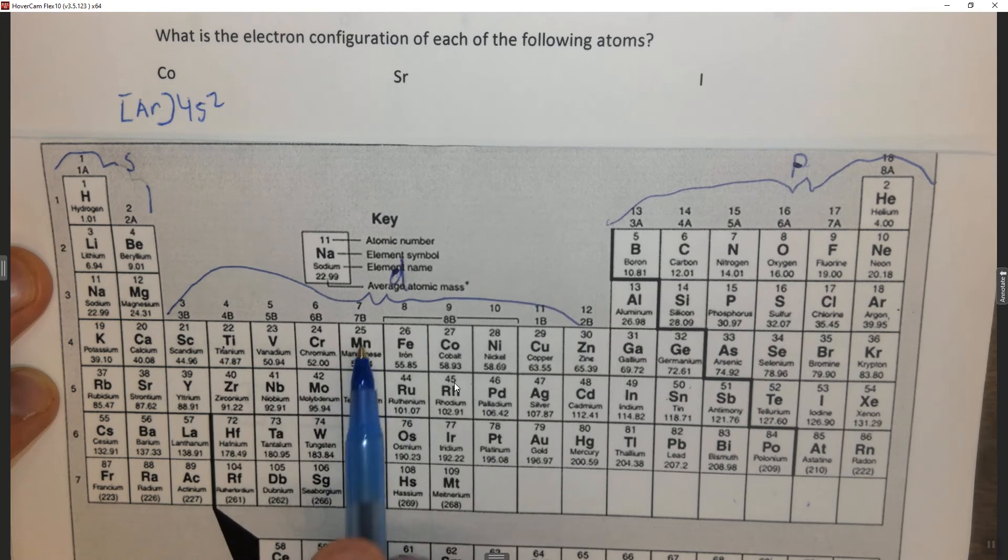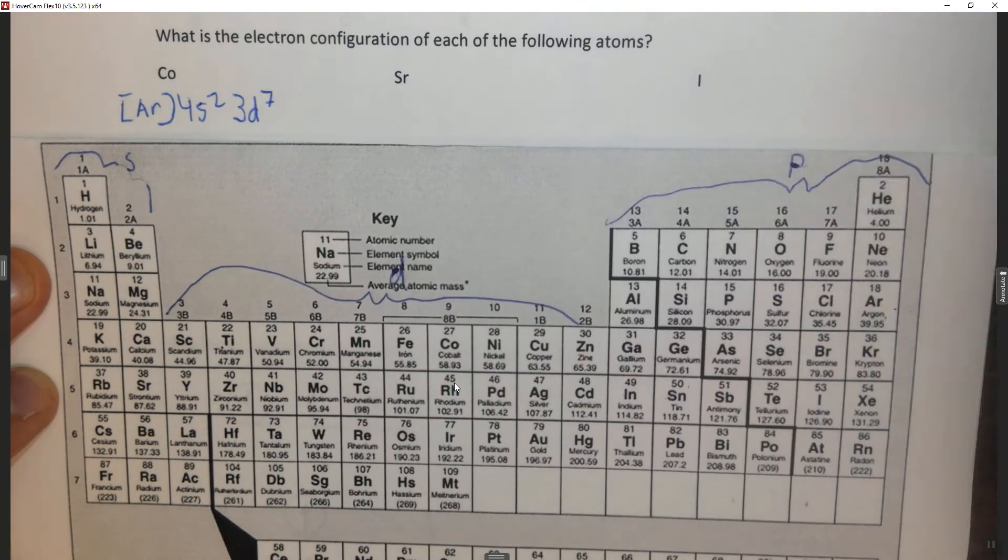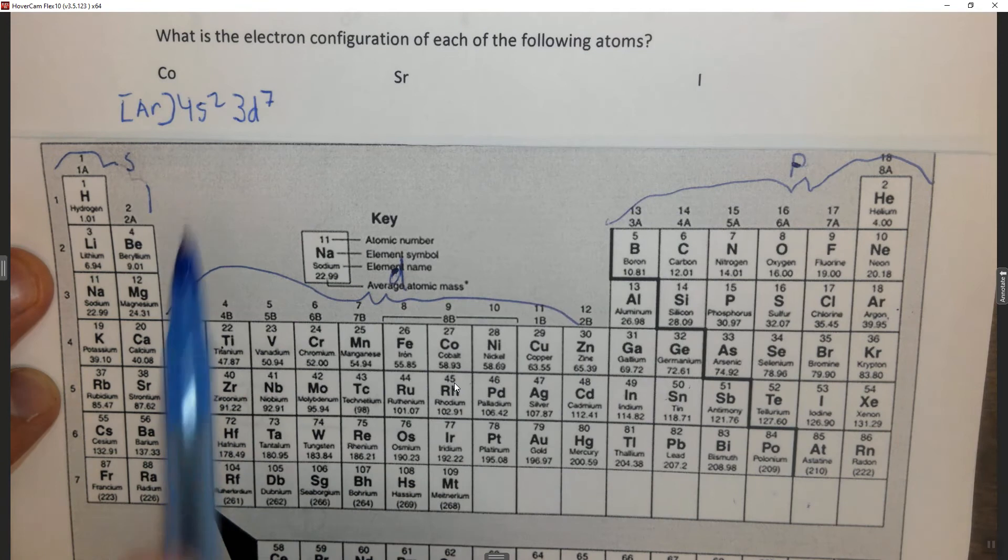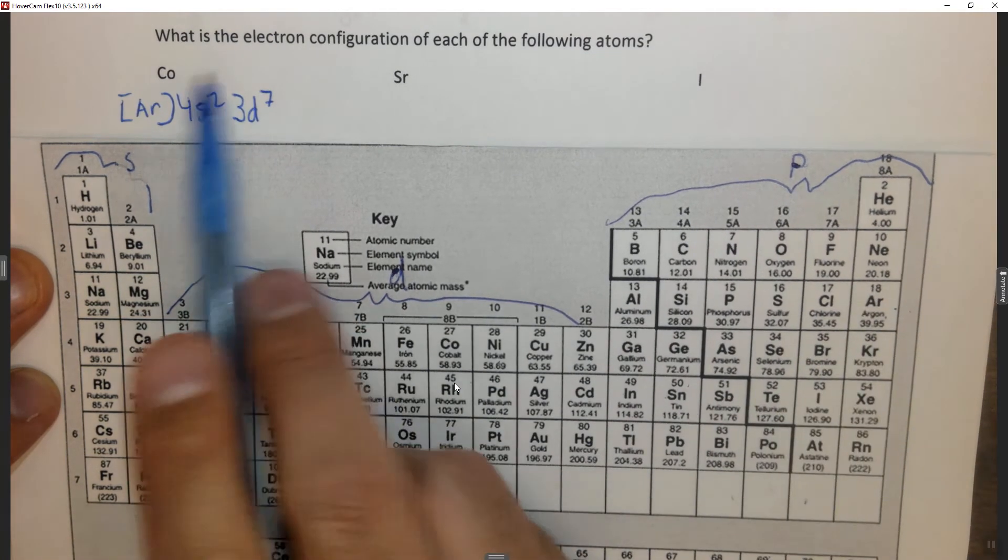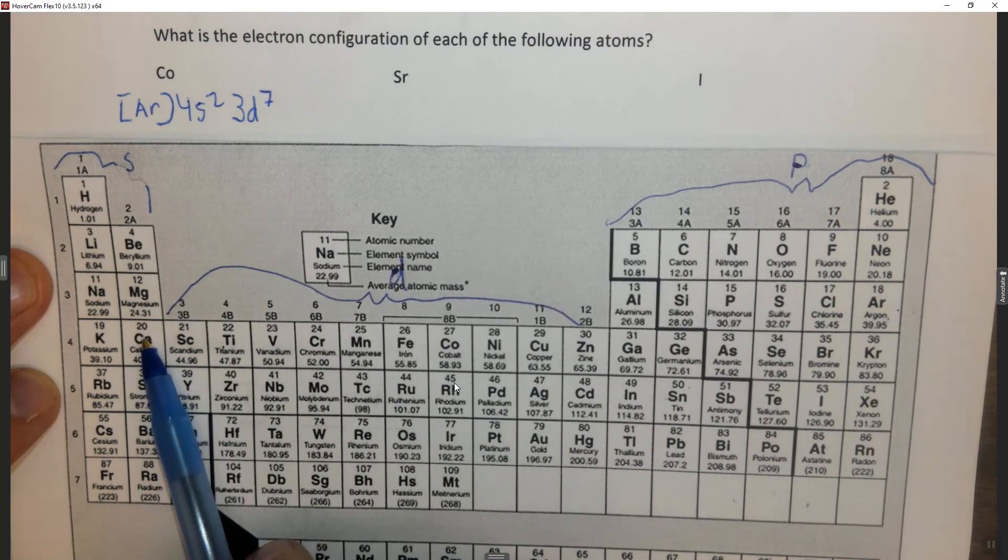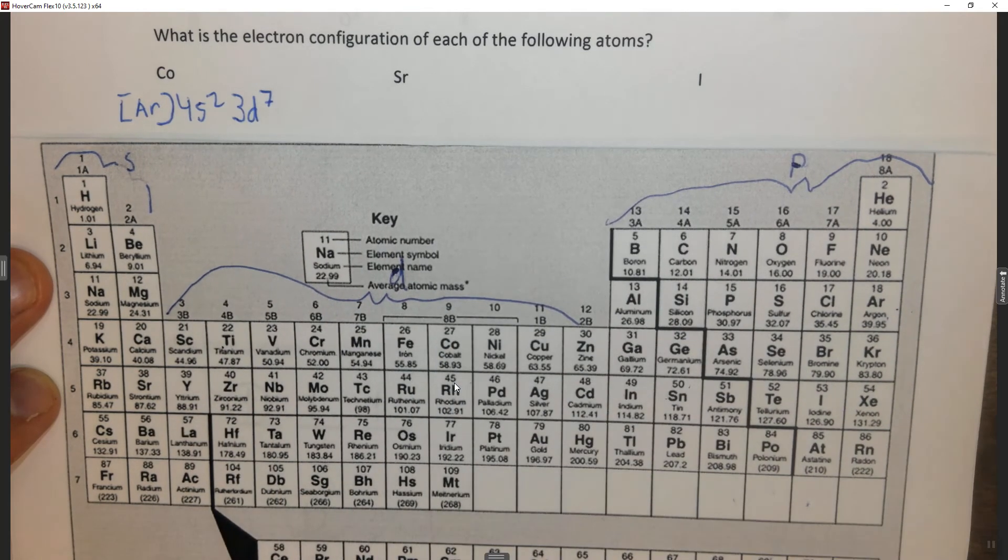1, 2, 3, 4, 5, 6, 7. So 3d7. A good way to check your work is argon accounts for 18 electrons, because it's number 18. Plus 2 is 20, plus 7 more is 27, which gives us cobalt.